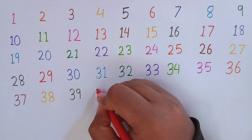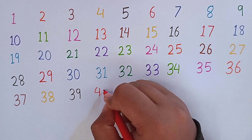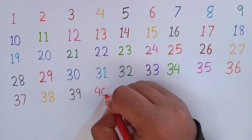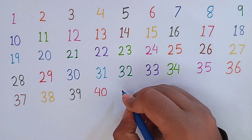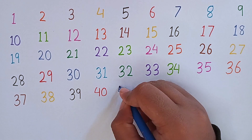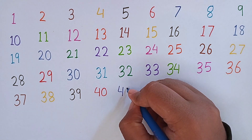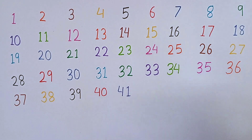Now I am writing 40. 4, 0 — 40. 37, 38, 39, 40. Now I am writing 41. 4, 1 — 41. After 41, I am going to write 42. 4, 2 — 42. 37, 38, 39, 40, 41, 42, 43.